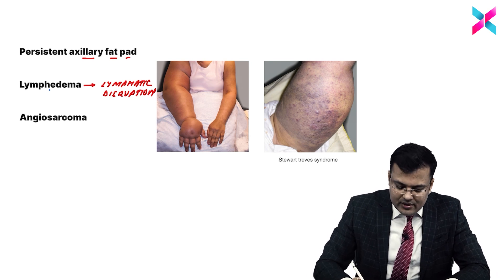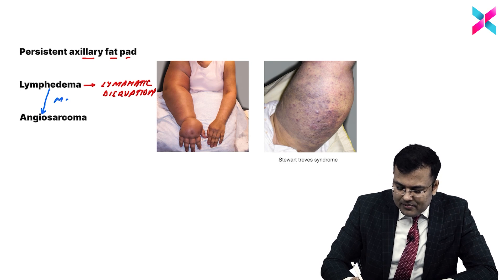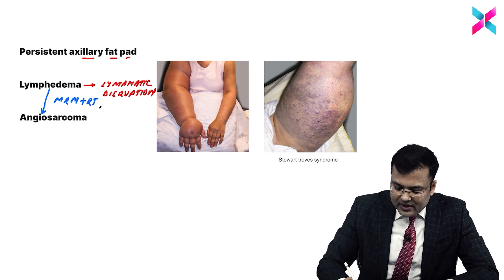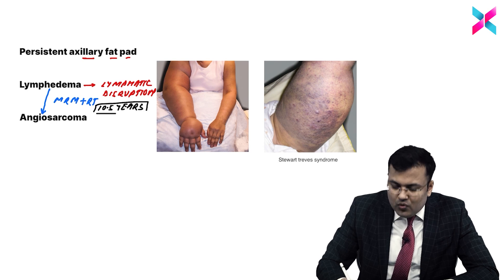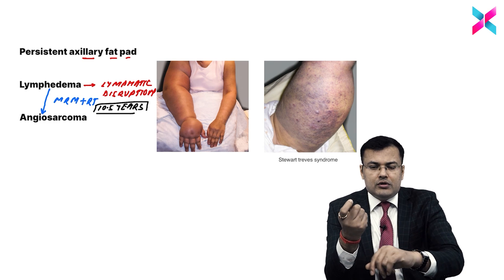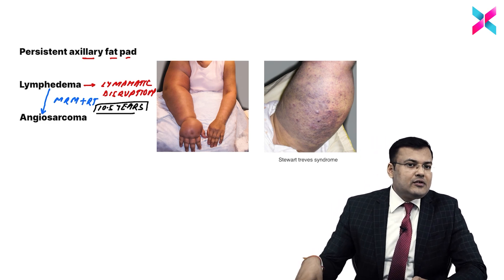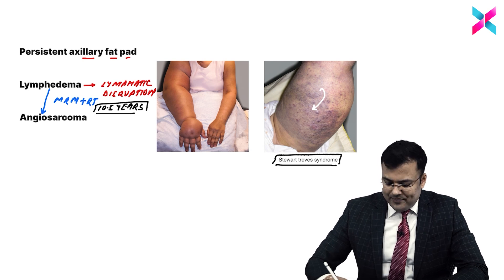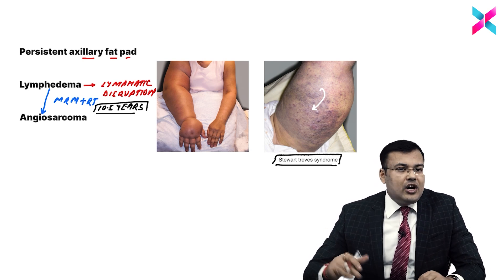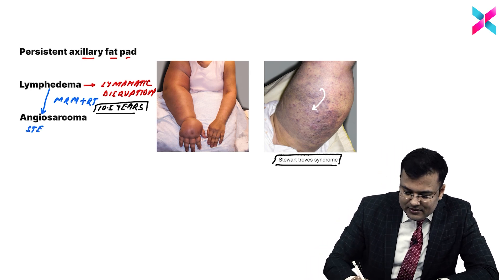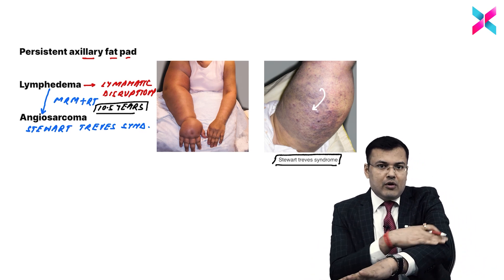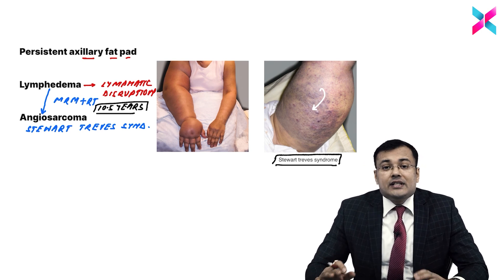One special complication occurs. Imagine in a patient with carcinoma breast who has undergone modified radical mastectomy plus radiotherapy — usually after 10.5 years on average — these patients develop worsening of lymphedema, violet or purple color nodules, and severe pain in the affected limb. This is known as angiosarcoma, and the name of this syndrome is Stewart-Treves syndrome. It is a frequently asked question. You will find violet, purple, or brownish nodules over the skin, worsening lymphedema, and severe pain in the affected limb.